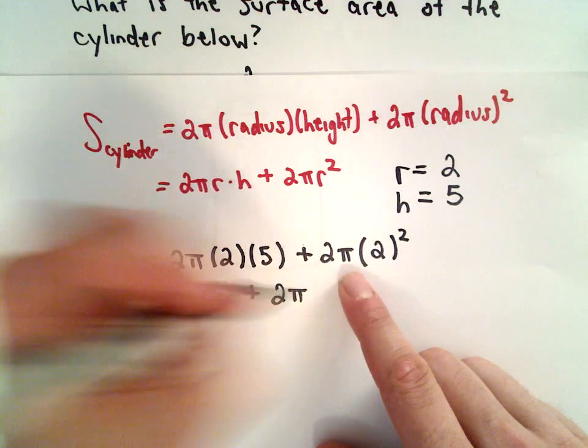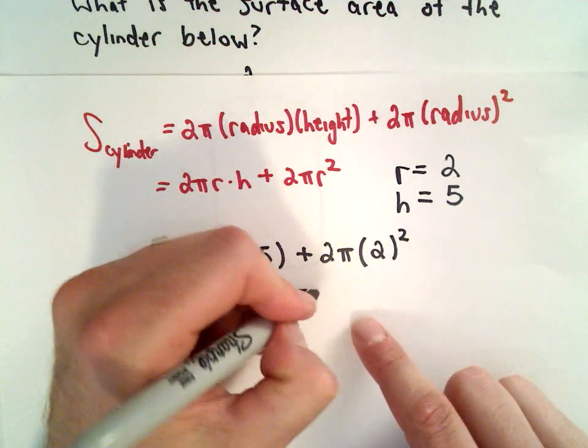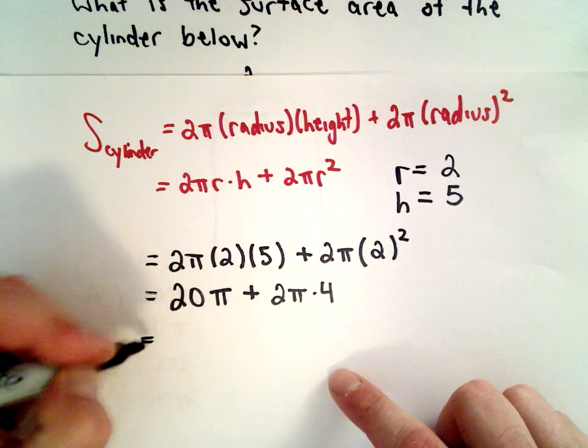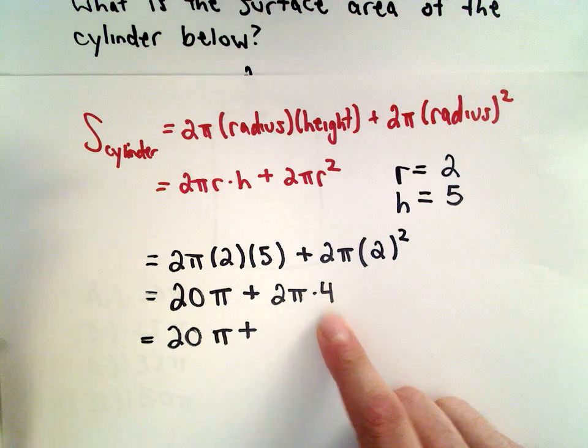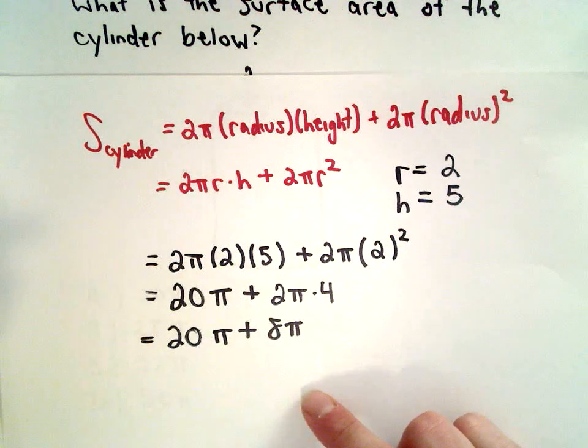We've got 2π. Recall 2 squared—that's 2 times 2, that's going to be 4. 2 times 4 is going to be 8, still multiplying that by π.